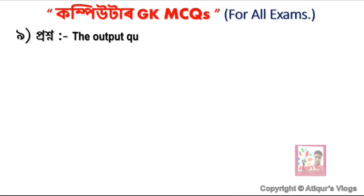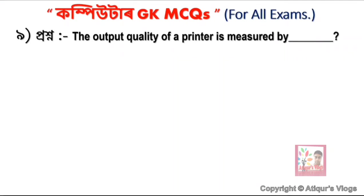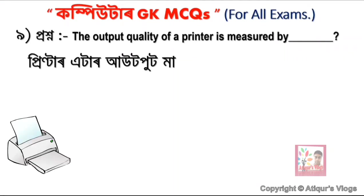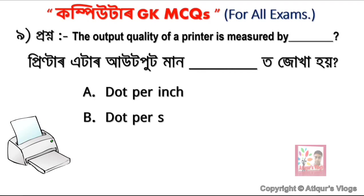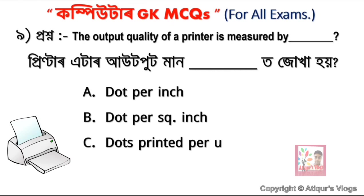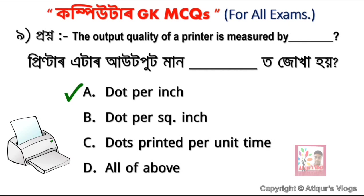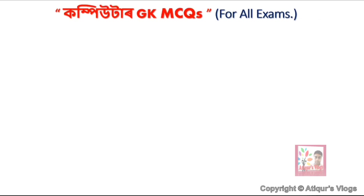Question 9: The output quality of a printer is measured by — option A Dot Per Inch, option B Dot Per Square Inch, option C Dots Printed Per Unit Time, and option D All of the Above. Option A is correct — Dot Per Inch (DPI) is how printer output quality is measured.